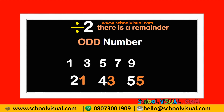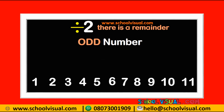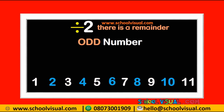So they are all odd numbers. If you write out the normal numbers, you notice that odd numbers are always between even numbers, and the same thing — even numbers are always between odd numbers. Do you understand?